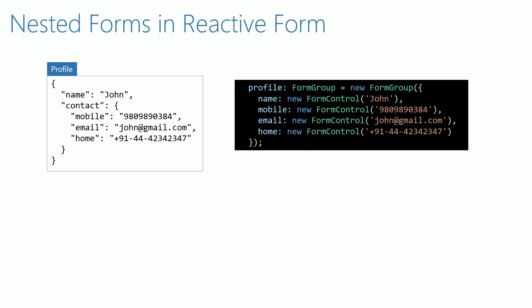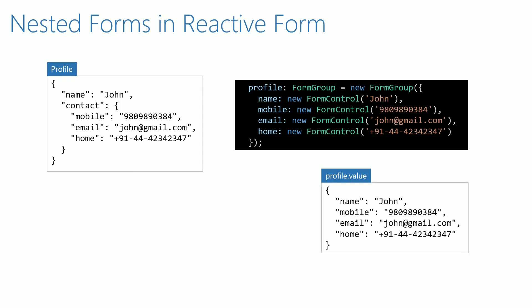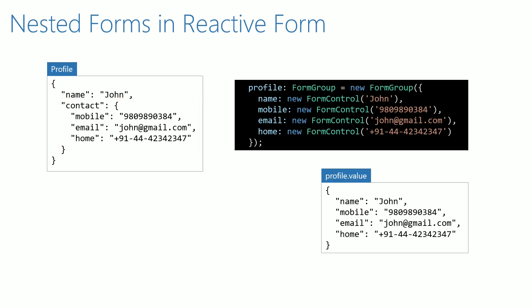From the earlier videos, we already know how to get the form data from the form group object using the value property. If we read the form data from the value property, we can notice the difference between the actual model object and the model object generated by form group. In the expected model, contact is defined as a separate object, but the model object generated by form group does not contain the grouping of contact details.